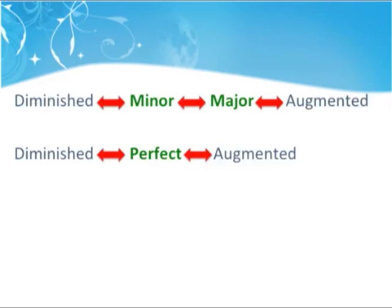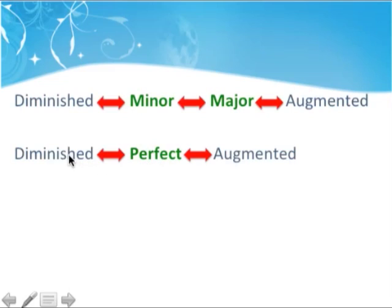This is another way of saying exactly the same thing. Diminished — when sharpened becomes minor; when that's sharpened becomes major; when a major is sharpened it becomes augmented. And likewise the other way: augmented flattened becomes major, major becomes minor, minor becomes diminished. Flatten the perfect interval and it becomes diminished; sharpen the perfect interval and it becomes augmented.